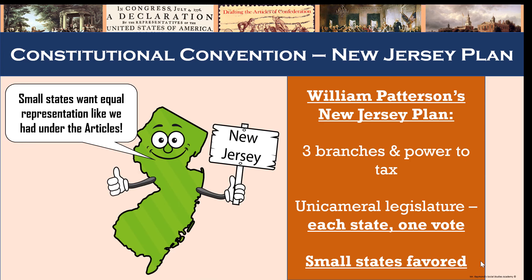This was exactly what the smaller-populated states had feared. They countered with what became called the New Jersey Plan, in which Congress would remain a unicameral legislature in which each state would have equal representation, as it had been under the Articles.